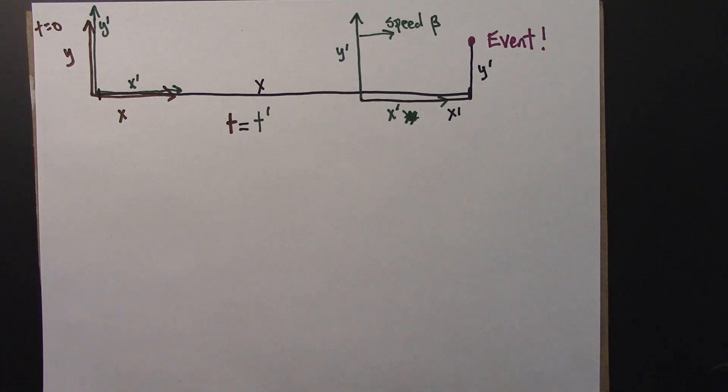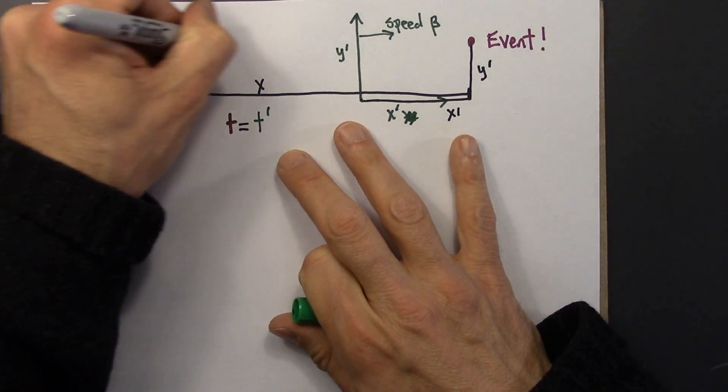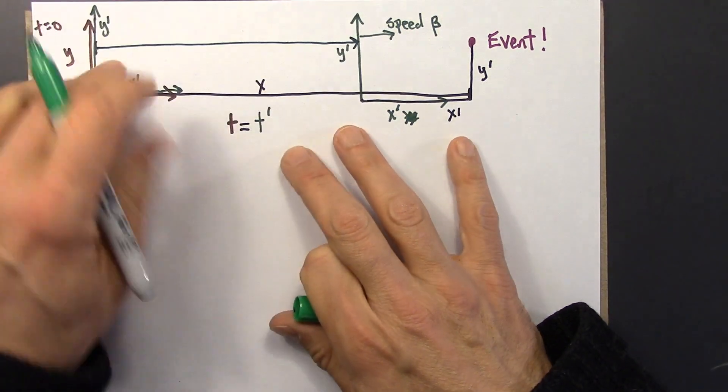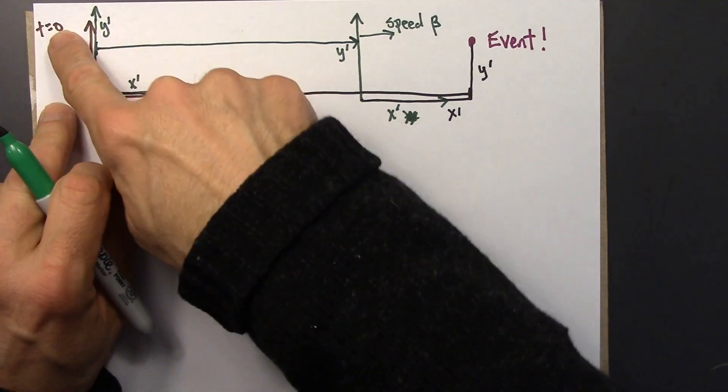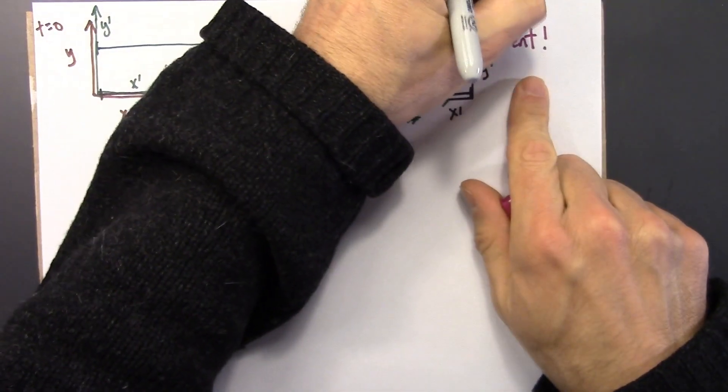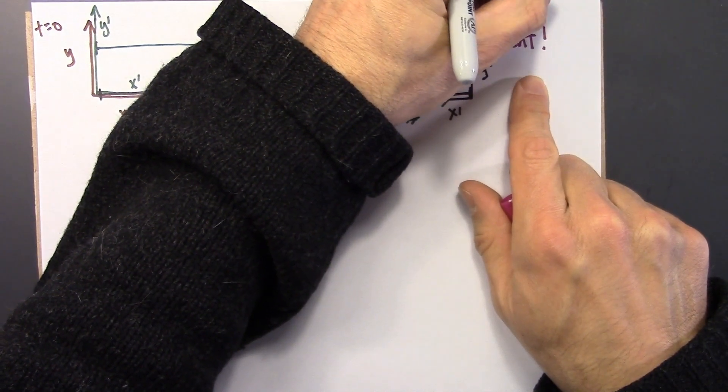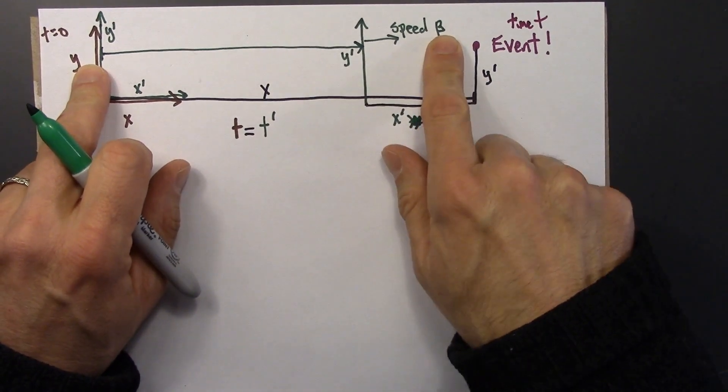I don't know what color, I'll use green again. So this distance here, this is how far the reference frame travels from time t equals zero to time t. So in t seconds, say, speed of beta,